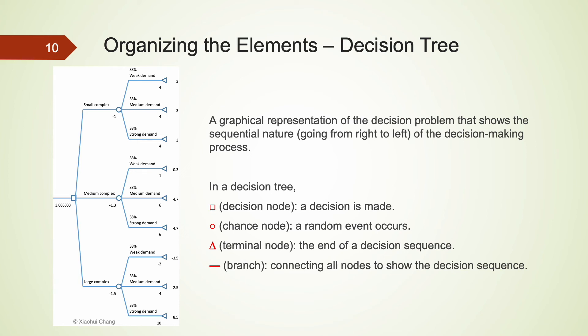The last set of nodes is a triangle. It is used to indicate the end of a decision process. All nodes are connected by branches. There are lines showing the alternatives from the decision nodes and the outcomes from the chance nodes.